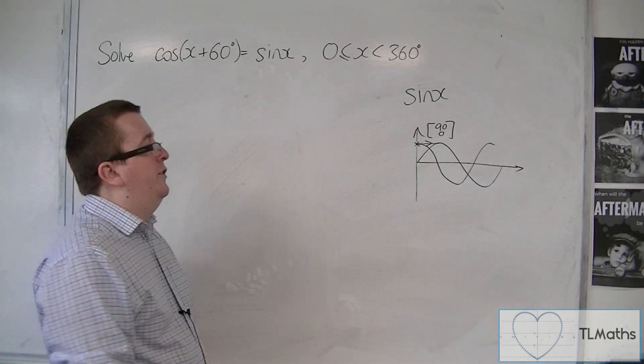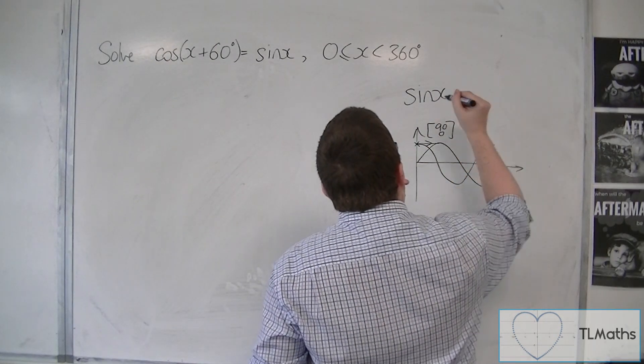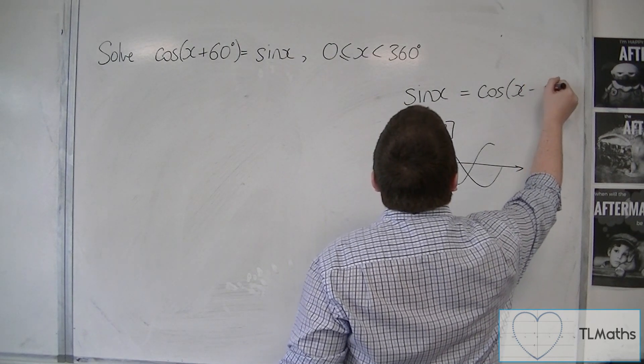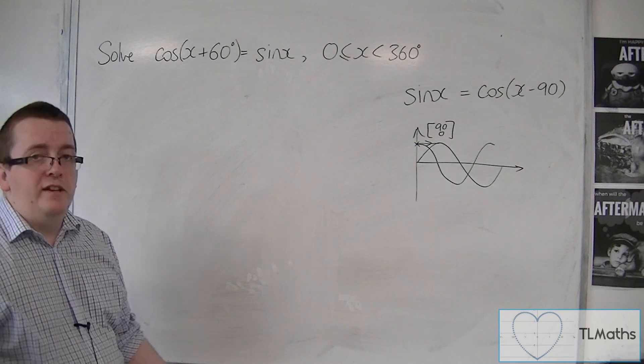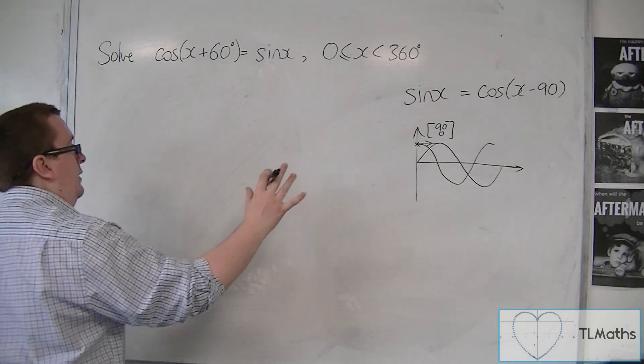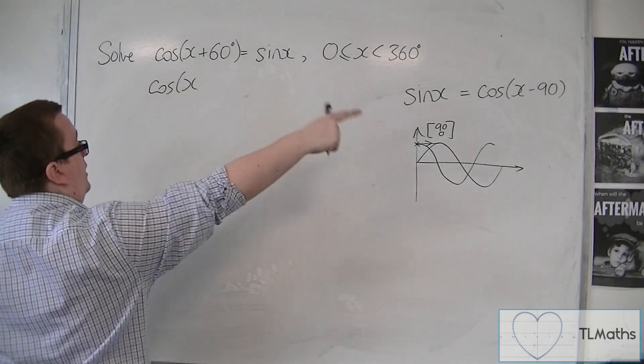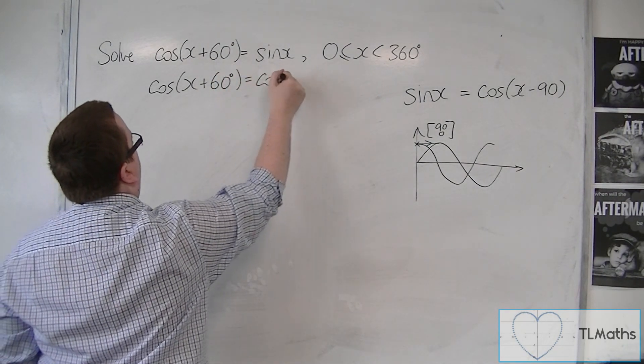So that means that sine x is the same as cosine which has been translated by 90 degrees to the right. And so, cos(x-90). What I could do is I could replace the sine x here with cosine of x minus 90.